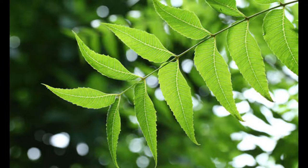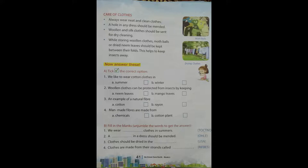We have already learned this. Now we will move to the exercise part. Children, I will read all the questions, then you have to think about the answers. The first group: pick the correct option. There are two answers given — one is right and another one is wrong. Read the question carefully and put a tick on the right answer.